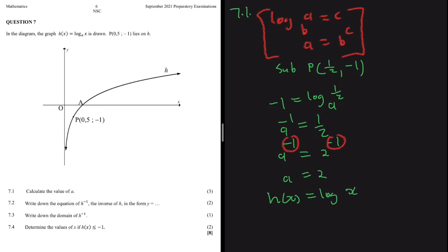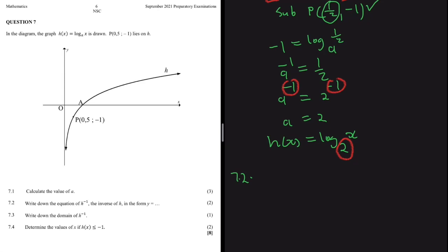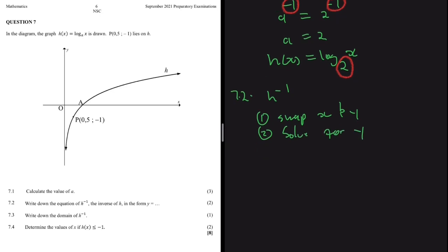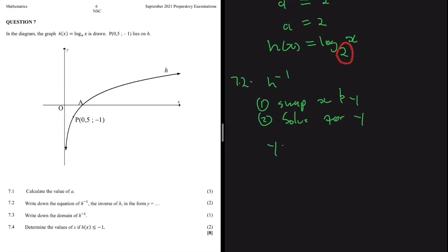You can verify by substituting the X value of point P into log base 2 of X — if you get -1, then what you did is correct. Moving to 7.2, which asks us to write down the equation of H inverse in the form Y equals. To find the inverse of a function, first swap X and Y, then solve for Y — after that you're essentially done. We know H(x) or Y equals log base 2 of X.